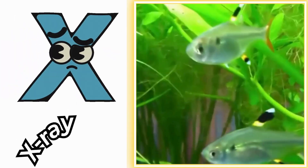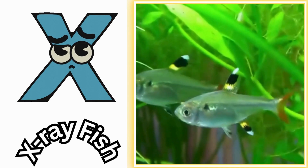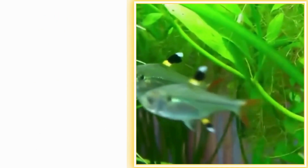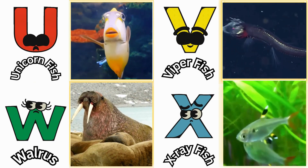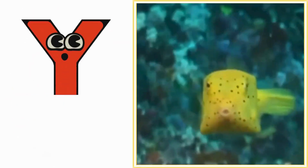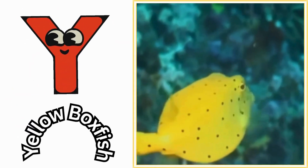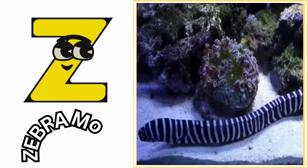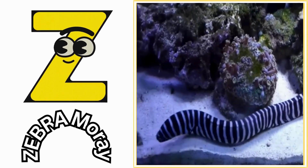X is for x-ray fish. Z, x-ray fish. Y is for yellow boxfish. Ya, yellow boxfish. Z is for zebra moray. Z, zebra moray.